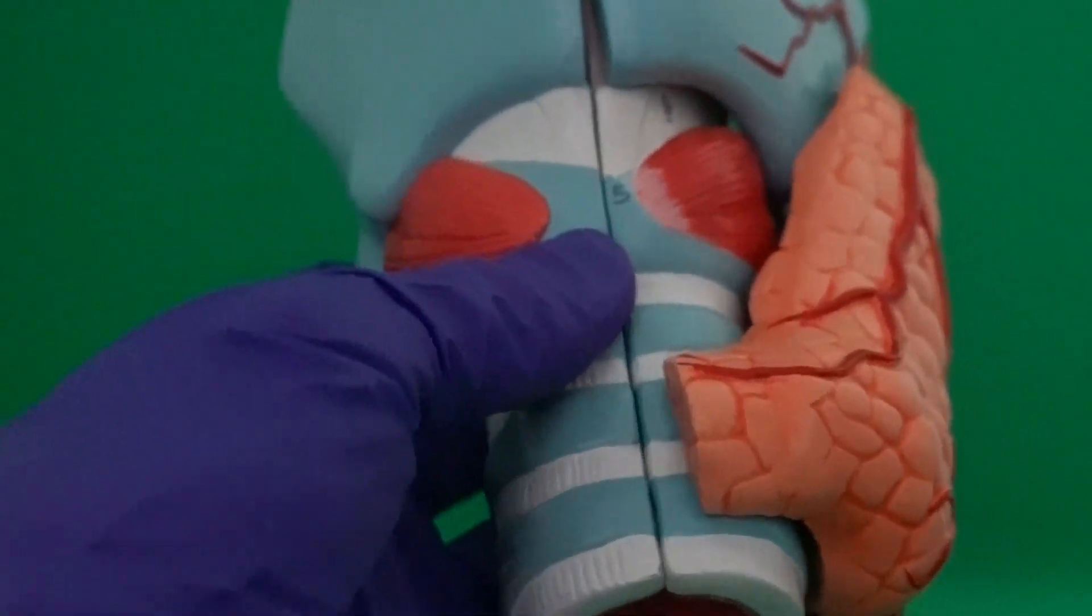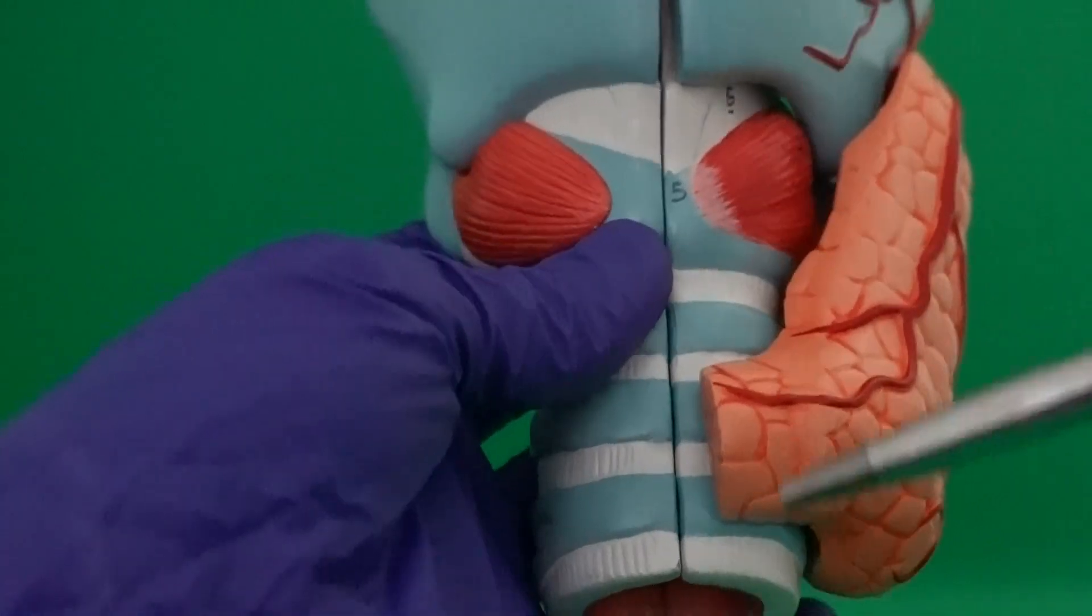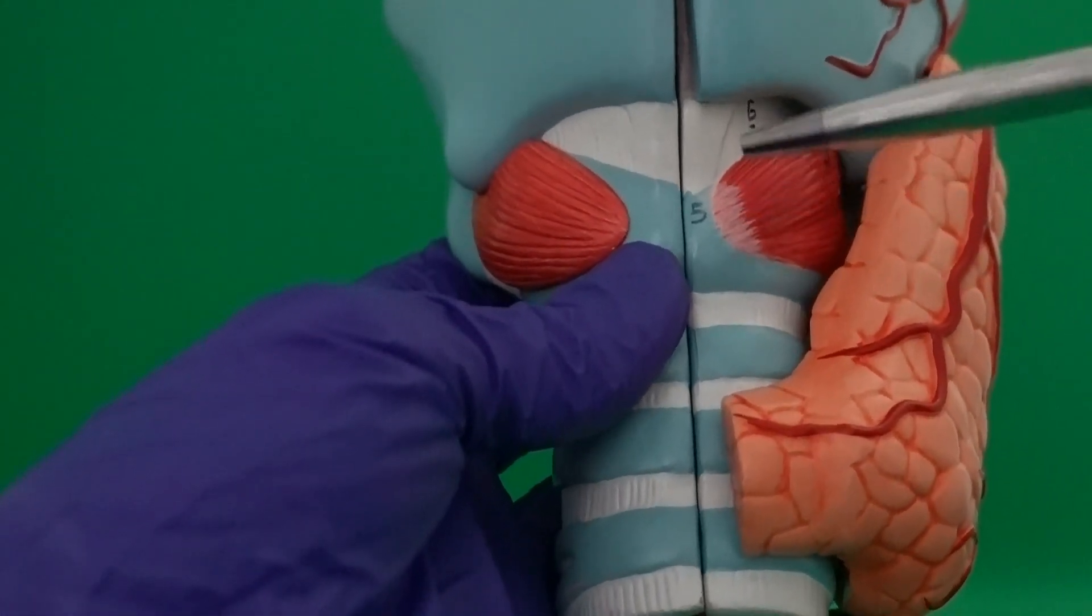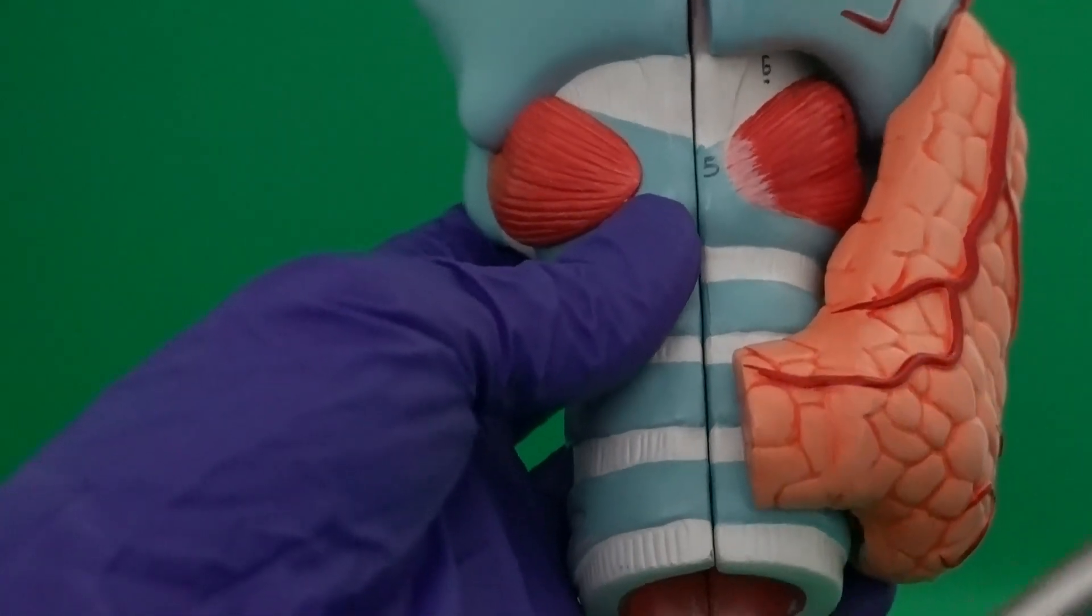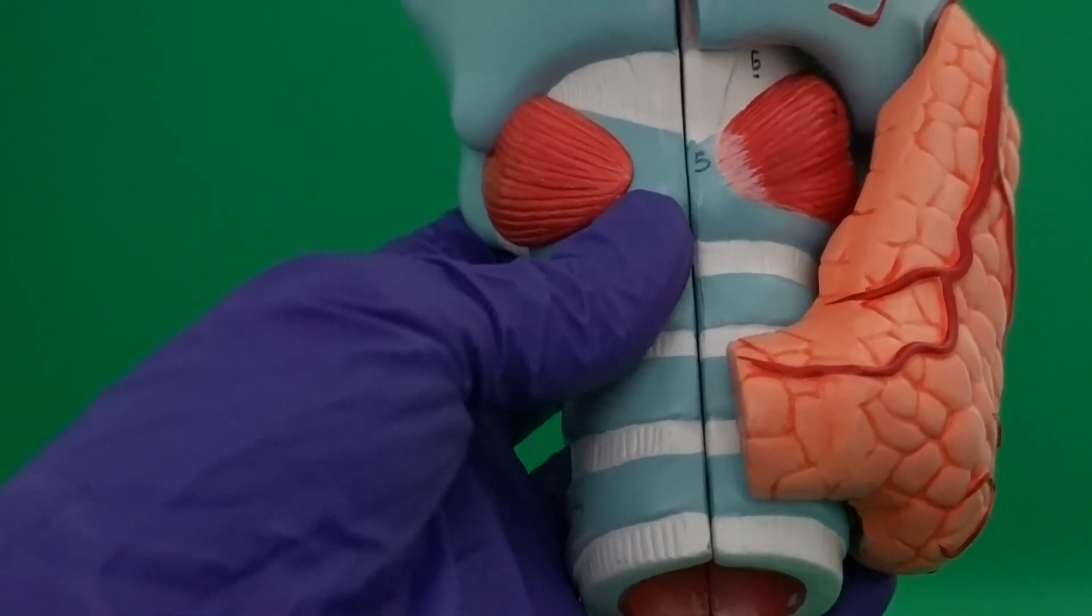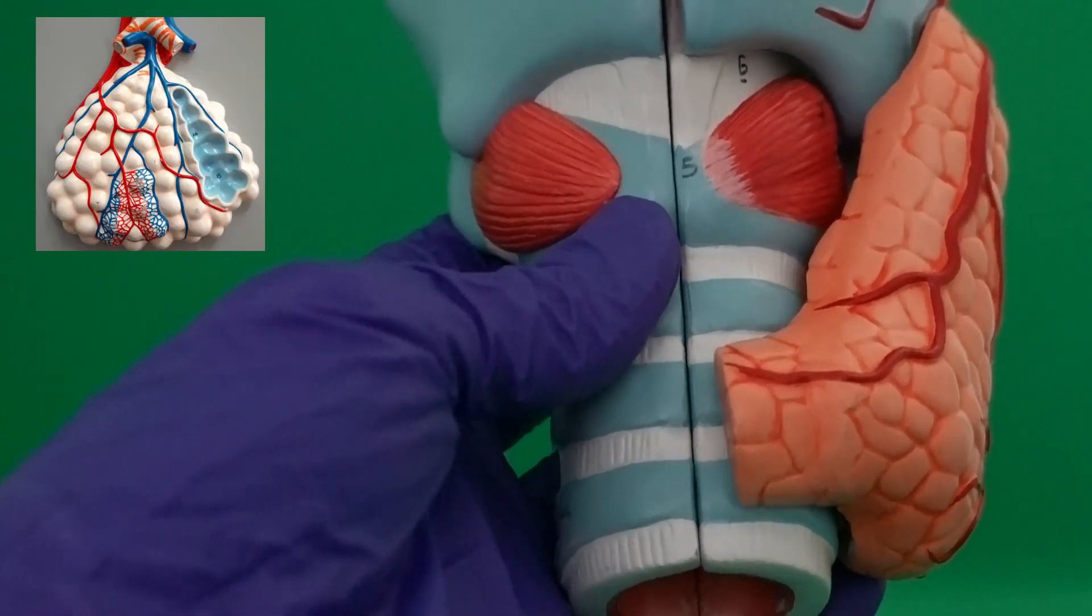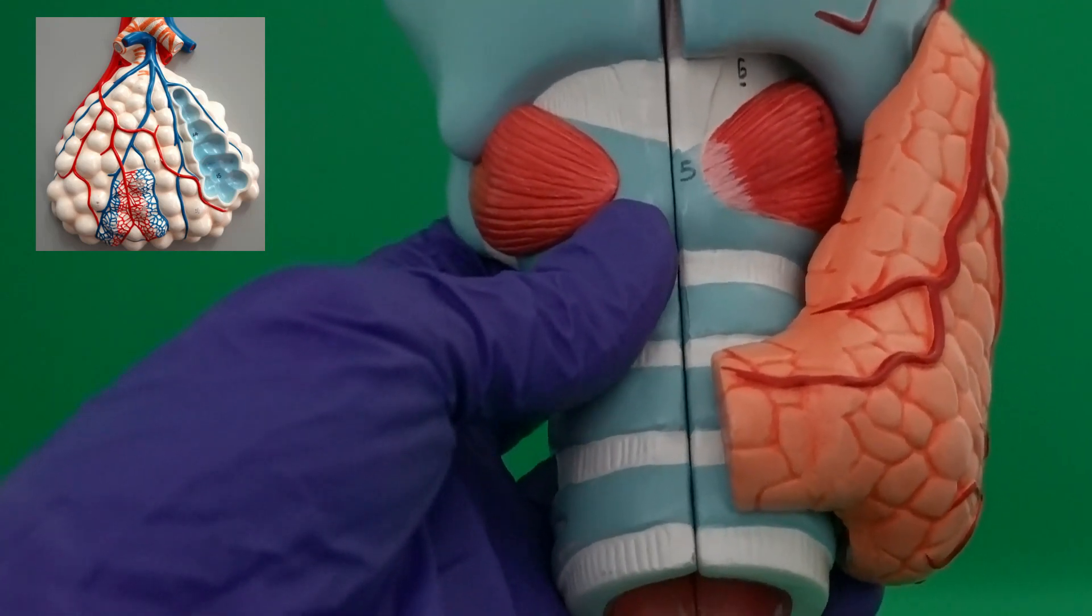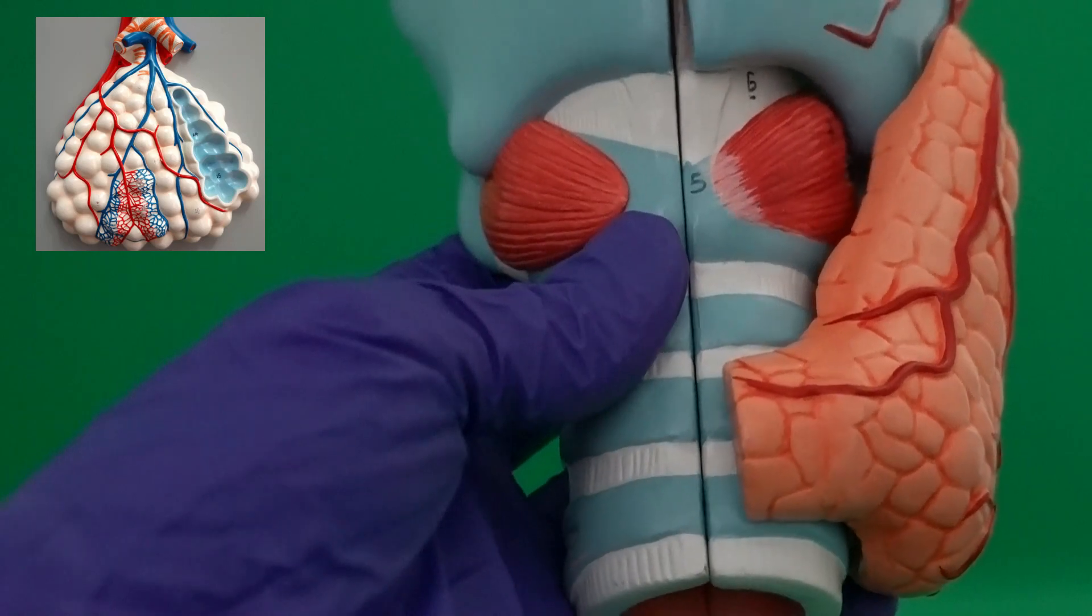So in those individuals, unfortunately, some of the secretion in the airways, instead of going up to be eliminated from the body, is going to move down. And eventually, it's going to block those smaller airways that we have inside the lungs, including the respiratory bronchioles, alveolar ducts, and the pulmonary alveoli.